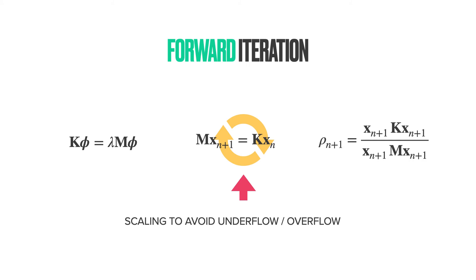In the forward iteration scheme, we simply iterate recursively until convergence assuming lambda is equal to 1. This is similar to the fixed-point method. Let x be an approximation of the eigenvector phi.